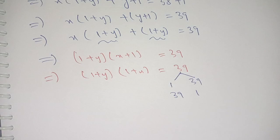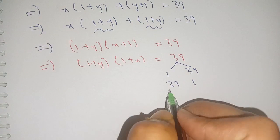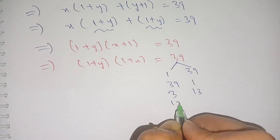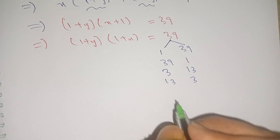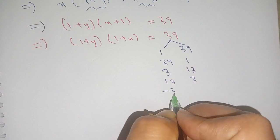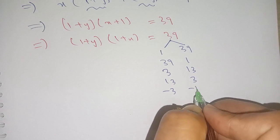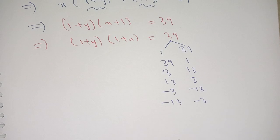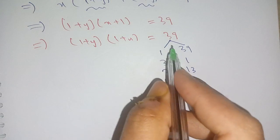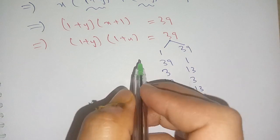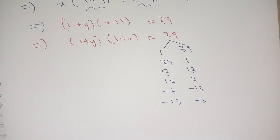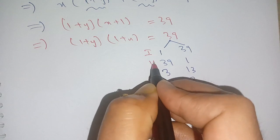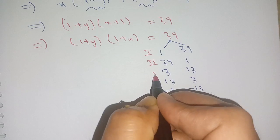The factors of 39 are: 1 and 39, 39 and 1, 3 and 13, 13 and 3, minus 3 and minus 13, and minus 13 and minus 3. These are all the factor pairs of 39. Our cases will be: case 1, case 2, case 3, case 4, case 5, and case 6.